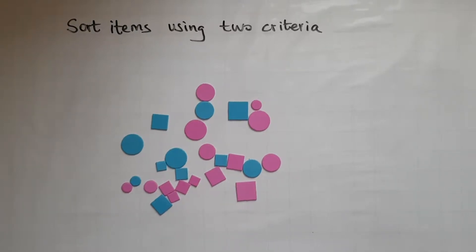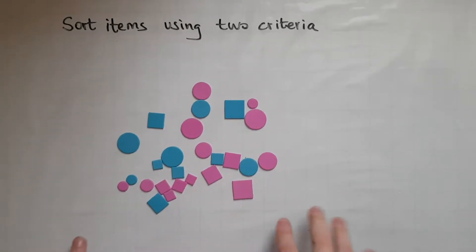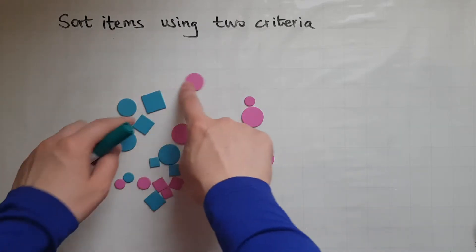In this video we'll sort items using two criteria. So looking at these shapes that I have here, what is different about them? I can immediately spot that there are two colors so that's one way to sort them.